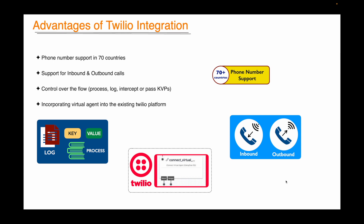With Twilio, you can have more control over the entire flow. Meaning, if you want to write logs or perform any logic or intercept before calling your virtual agent, or pass KVPs to the virtual agent, you can do that. This is not possible with DialogPro phone gateway. Last but not least, if you are already a Twilio customer, then this integration will help you to incorporate DialogPro CX virtual agents into your contact center.